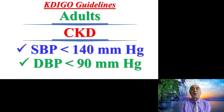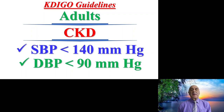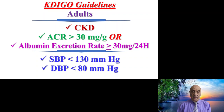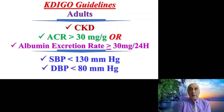According to KDIGO guidelines, adults suffering from chronic kidney disease who also have high blood pressure should have their systolic blood pressure kept below 140 and diastolic blood pressure below 90. For adults with CKD and an ACR above 30 mg per gram, or an albumin excretion rate of at least 30 mg per 24 hours, the systolic blood pressure should be below 130 and diastolic below 80.